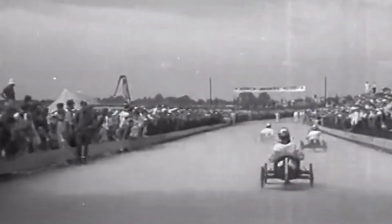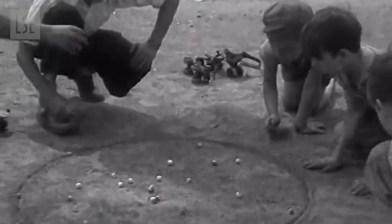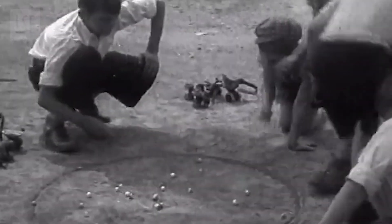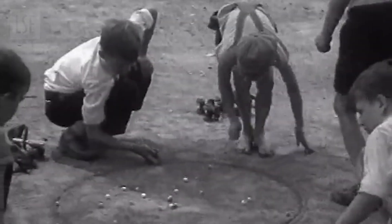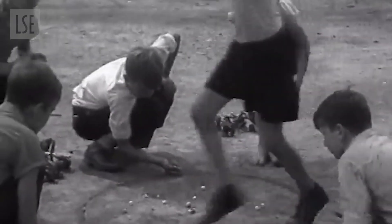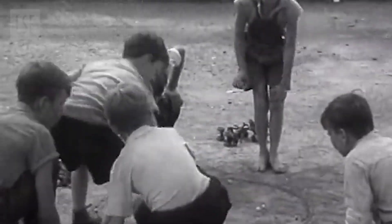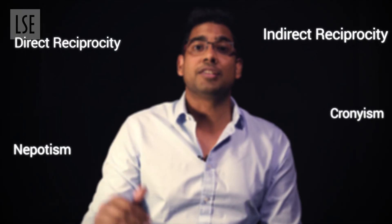So competition — at least group-level competition, what we call cultural group selection — might be what it takes to suppress corruption and to reach this kind of large-scale anonymous cooperation with successful institutions the world over.